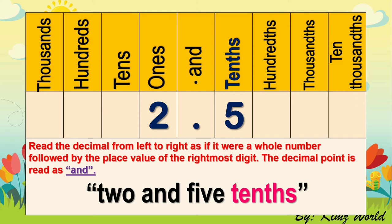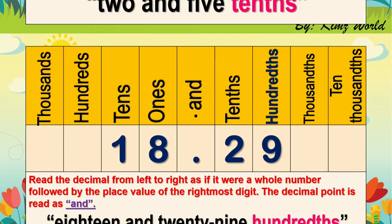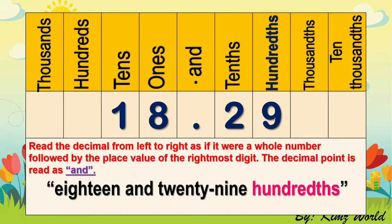Let us proceed to our next example. So we have 18.29. Let us read it from left to right: 18 and 29 hundredths. 18 and 29 hundredths.